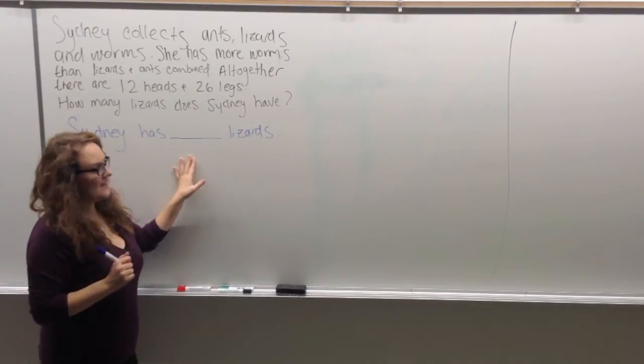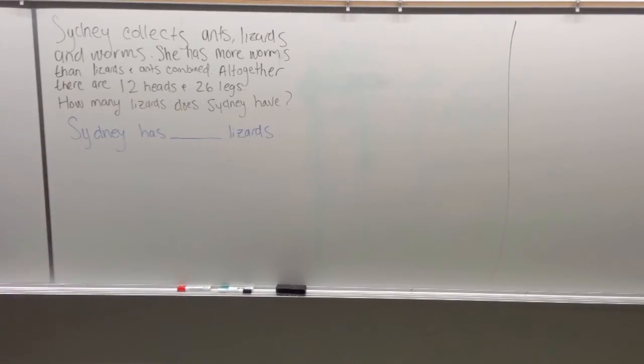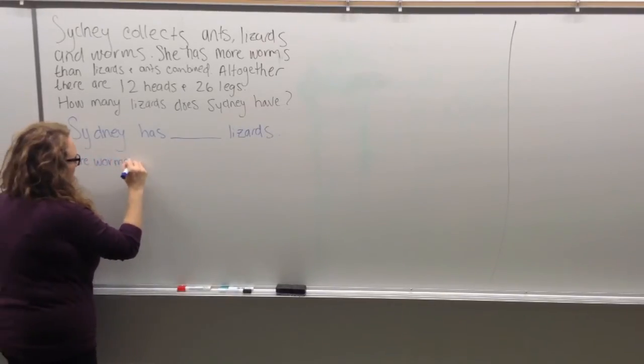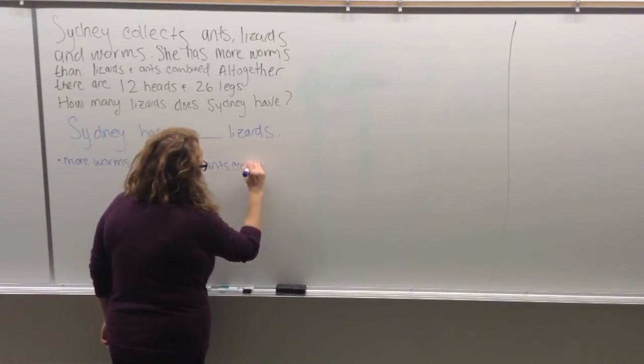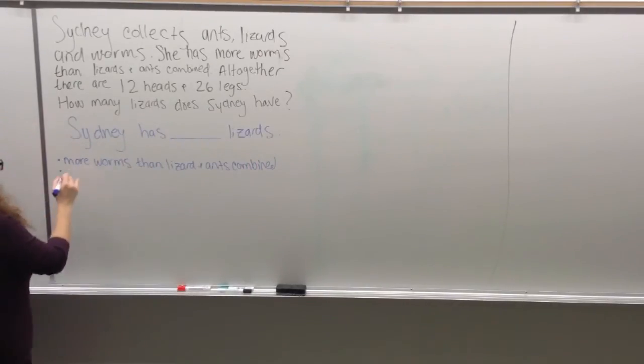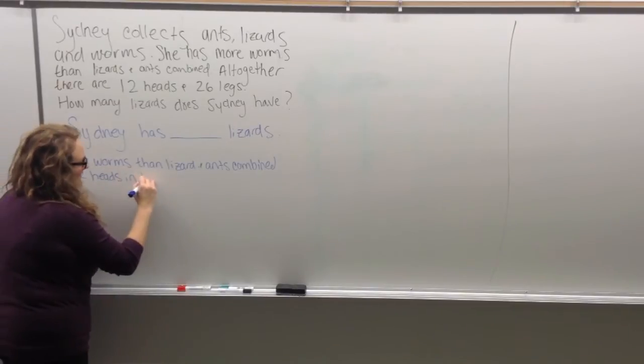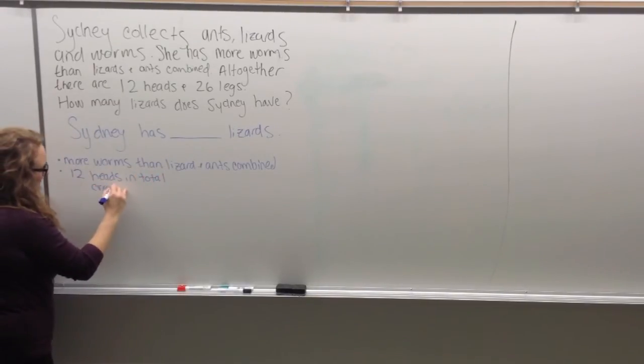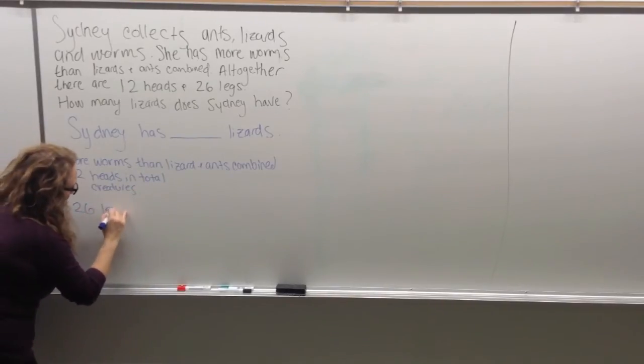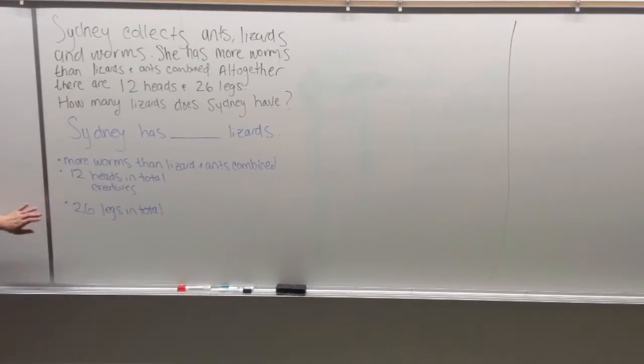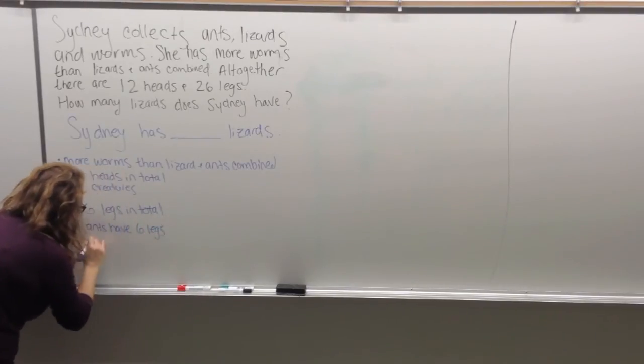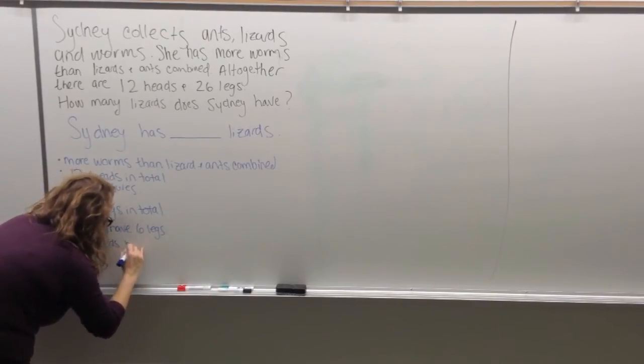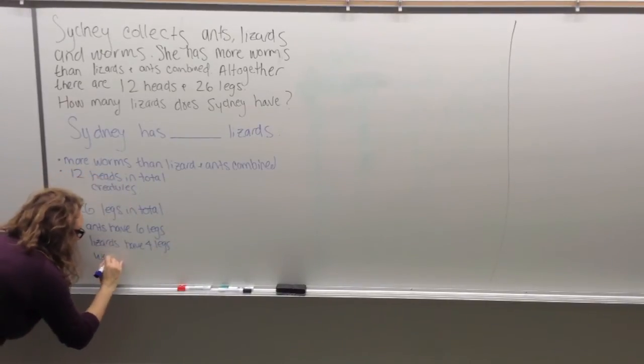So to start off, we're going to make a list of everything that we know. So what we know is, she has more worms than lizards and ants combined. We know she has 12 heads in total, which means she has 12 creatures in total. Next, we have 26 legs in total. And we have to figure out how many legs each of these have. So ants have 6 legs, lizards have 4 legs, and worms have 0 legs.